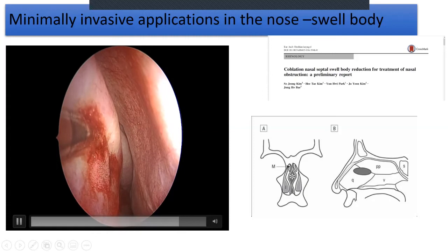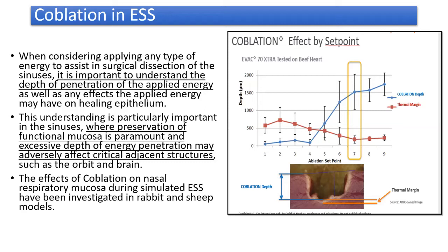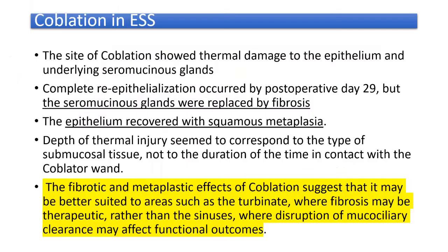Now, why not use coblation for FESS? It is important to understand that when picking a tool for endoscopic sinus surgery, the depth of penetration and impact on ciliated columnar epithelium matters. A paper shows that when coblation is applied in this area, the thermal damage to the epithelium and underlying seromucous glands is devastating — complete re-epithelialization occurs by day 29 but the seromucous glands are replaced by fibrosis.